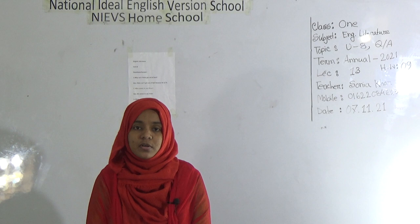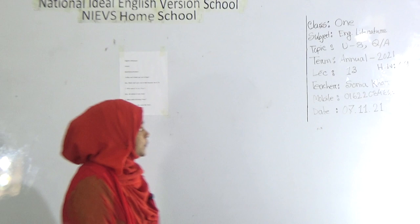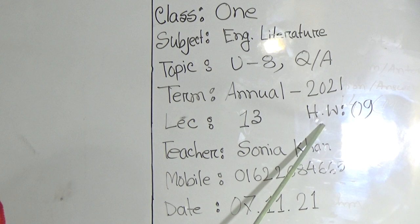Today I am going to take English Literature class for class 1 students. And our today's topic is Unit 8, Question Answer. Look at the board my students. This is class 1, subject English Literature, topic Unit 8 Question Answer, term annual, lecture number 13 and homework number 9. This is my teacher name, my mobile number, and today's date.